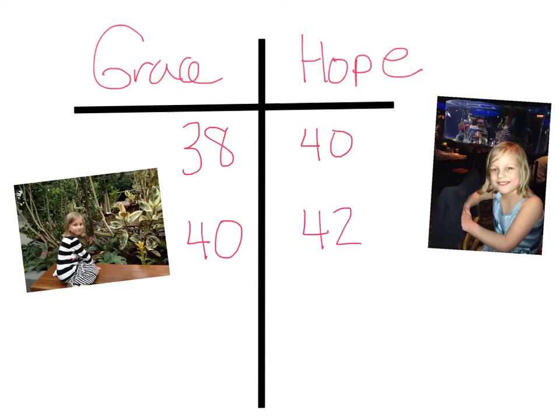So how could we represent this if Grace's height was y inches? Well, we could simply say y plus 2 if Hope were to stay consistently 2 inches taller.